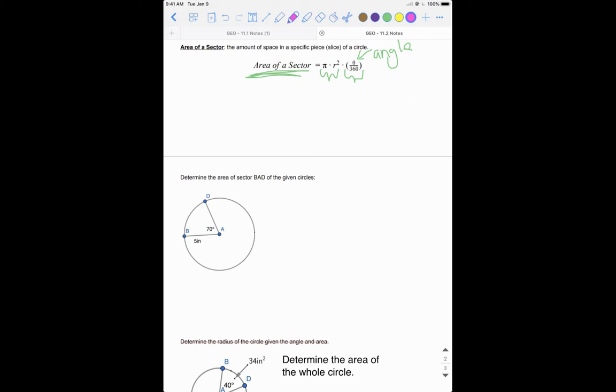If we set up our area of a sector, area of sector equals π times our radius squared. All we're doing is using this equation: π times our radius squared, which is 5 squared, times 70 over 360.